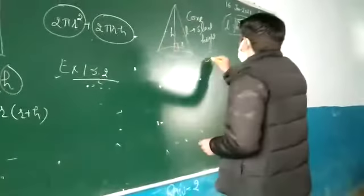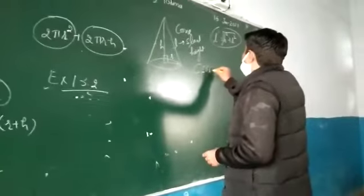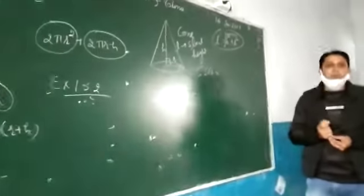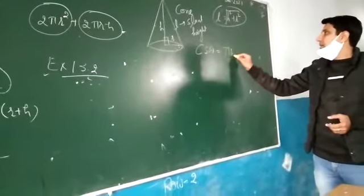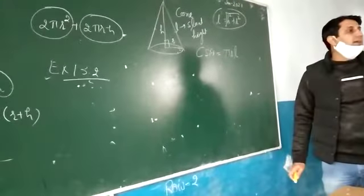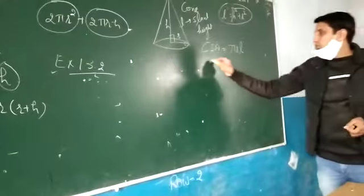Now, curved surface area of a cone. Curved surface area of a cone. πrl. πrl. Total surface area: πr(r + l). Clear.